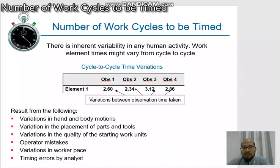In this session, I want to discuss the number of work cycles to be timed during the direct time study procedure. The number of cycles that should be observed depends on the variability in the work and the level of accuracy required.